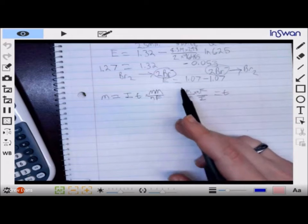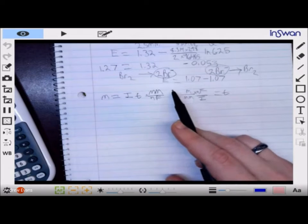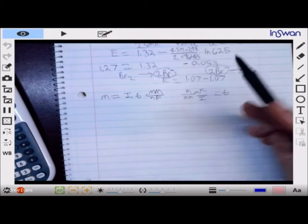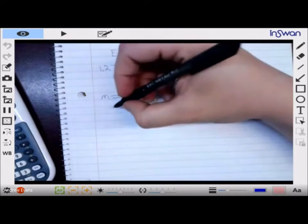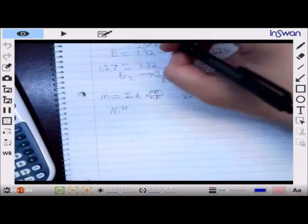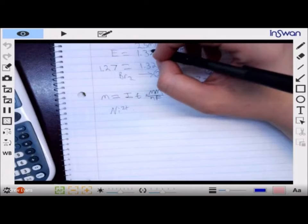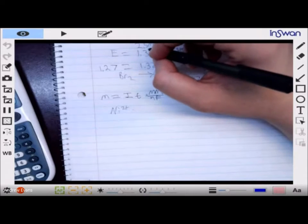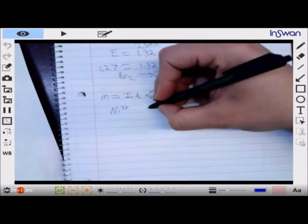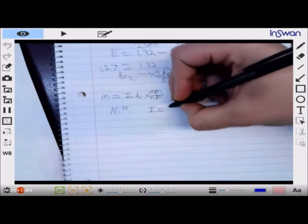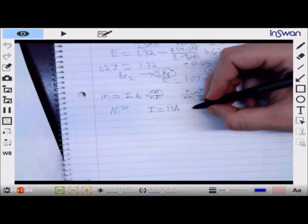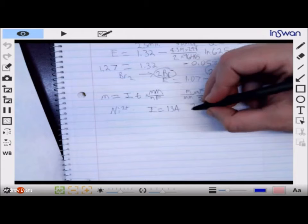Now, most times you will not be given an equation like this, but if you look at your units, you can easily determine what the units should be. I'm going to go with nickel, nickel 2 plus. I want to electroplate nickel 2 plus. If I asked how much nickel 2 plus could be electroplated with a current of 13 amps and a time period of 2 hours.